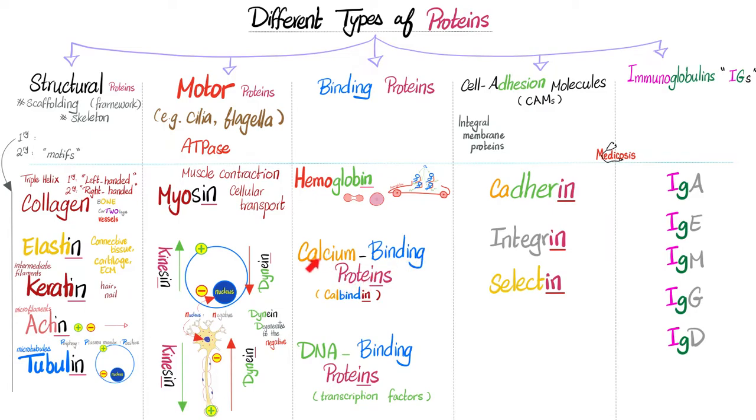Calcium binding proteins. Look at that. Calcium, cal. Binding, bind. Protein, I-N. Cal-Bindin. Usually when the word ends in I-N, it's protein. There are exceptions, of course, like heparin. Heparin ends in I-N, but it's not a protein. Now everything should make sense.